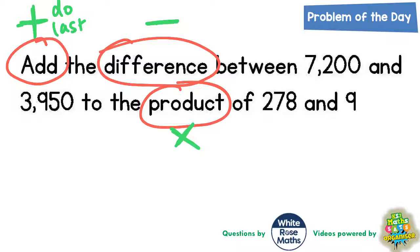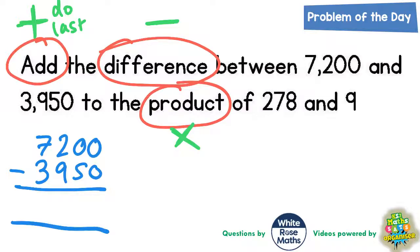So job number one, let's do the difference. So difference between 7200 and 3950. That's a subtract like we've just said. So let's work that out.